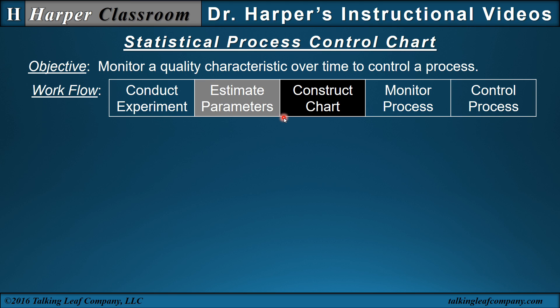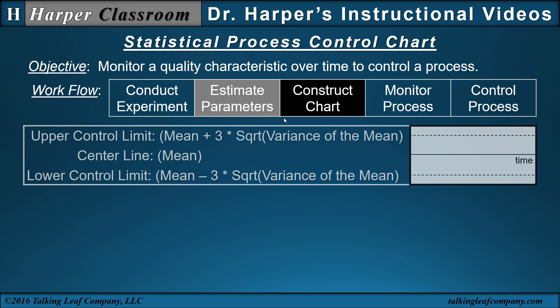This video will not describe how to conduct the experiment, the experimental designs, how the charts are used to monitor or control the process, or the underlying assumptions for each chart needed to know how and when to use or interpret them — that will be the subject of other Harper Classroom videos. The structure of the chart is: the center line is the mean, and the upper and lower control limits are the mean plus or minus 3 times the square root of the variance of the mean.